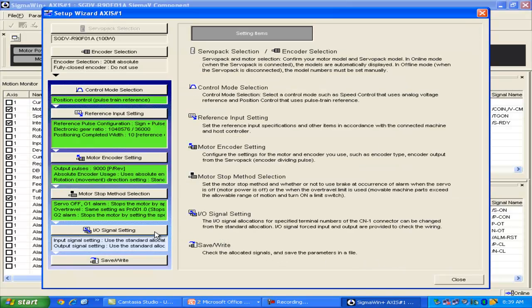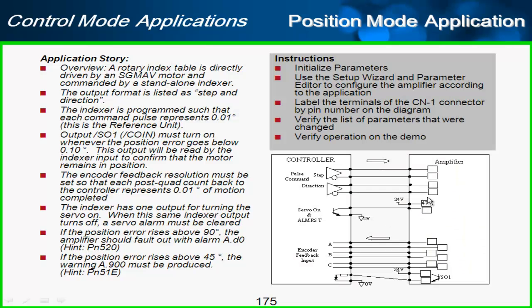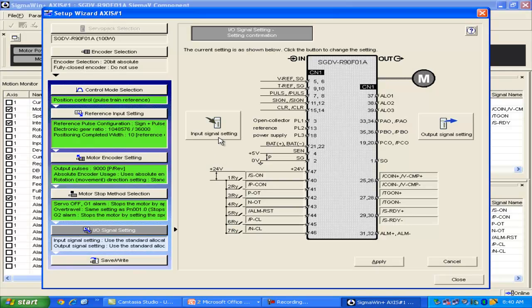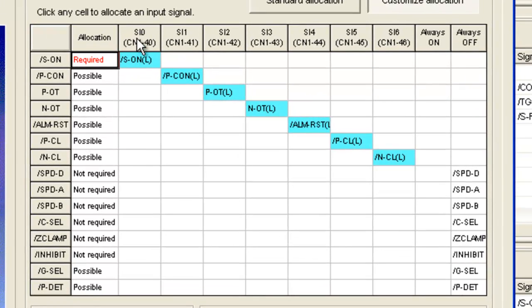Now for the I/O signal setting. For inputs, we see that the amplifier input servo on should also take the function of alarm reset when the servo on signal turns off, or when this input turns off. So I'll go into my input signal settings, and you see that I already have servo on, but alarm reset is on pin 44. So I can move that over and make it on the same pin.